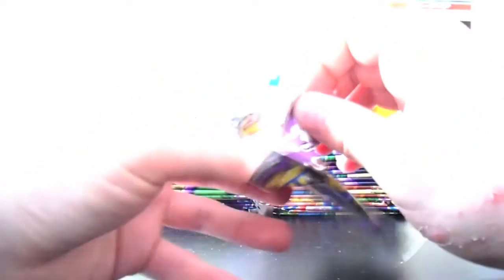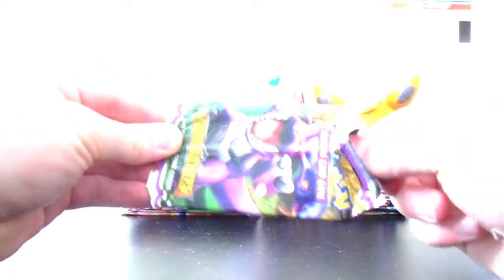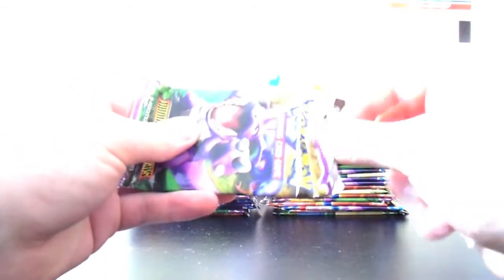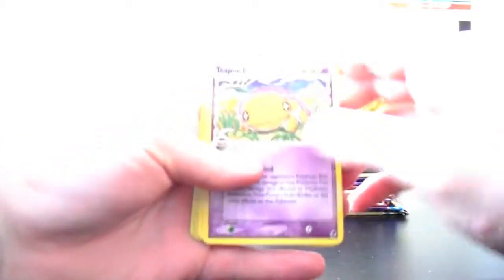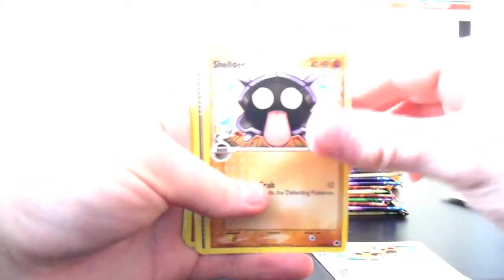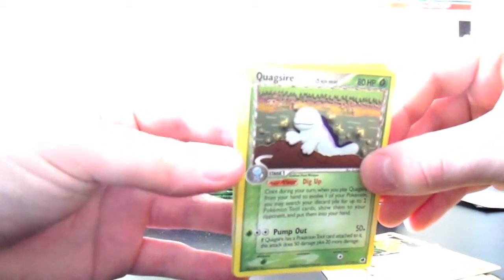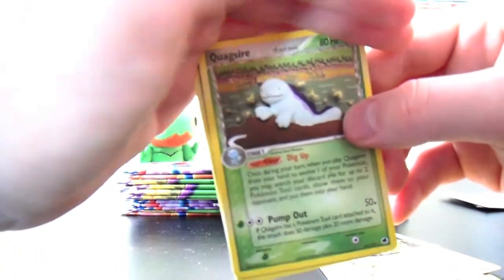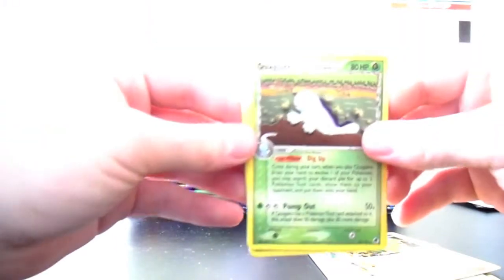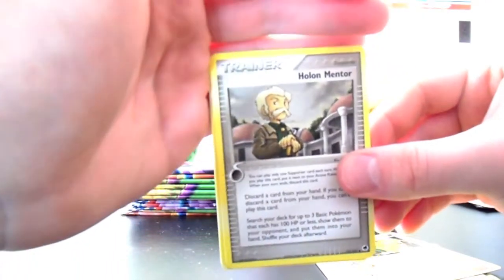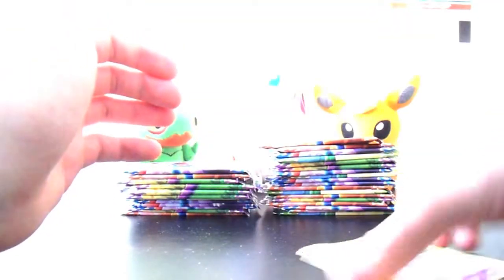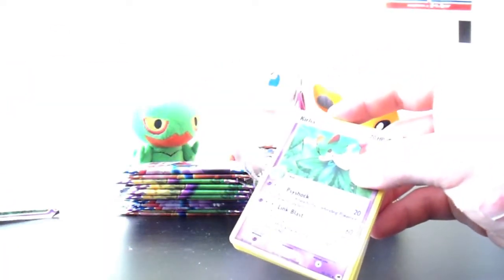So we got a Nidoking pack now. Trapinch, Ledyba, Shellder, Switch, Pupitar, Bayleef Reverse. And a Quagsire regular rare. That's a Grass-type Quagsire. The green goes pretty nicely with it. Try to block the glare, block the sun. Yeah, green and Quagsire goes well together. I don't know why. Holon Mentor and Kirlia. Two different Kirlias. One's a Fire-type.